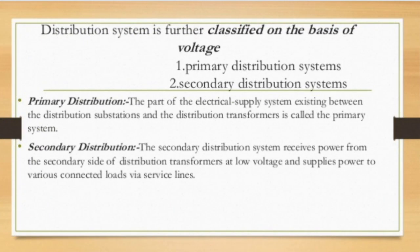Distribution systems are mainly classified into two types: primary distribution and secondary distribution systems. Primary distribution is the part of the electric supply system that exists between the distribution substation and the distribution transformer, and is called the primary distribution system.